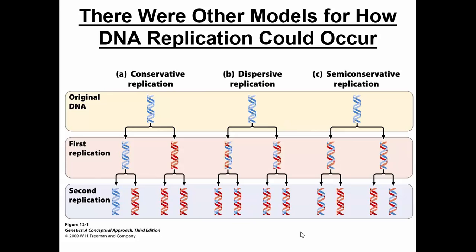Some people thought DNA replication occurred in a conservative manner — in other words, if we had the double helix, a completely new double helix was made from it. The strands did not separate; rather they were replicated intact, staying together and producing another double helix, almost like it was stamped. If you follow that to the next generation, you can see this is our original one still, and another has replicated from that.